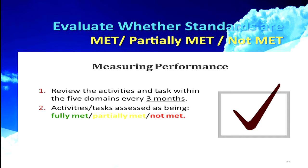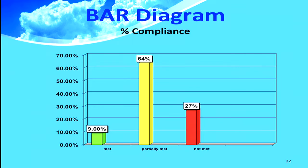This gap analysis has to be done every three months. You should make a bar diagram or some understandable format for all staff to understand, so that they know where the hospital stands right now and how much they still have to go.